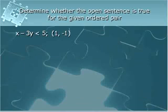Our first question is to determine whether the open sentence is true for the given ordered pair. We're asked to take this open sentence, x minus 3y less than 5, and take this ordered pair and see if when we substitute it in for x and for y, we get a true statement.